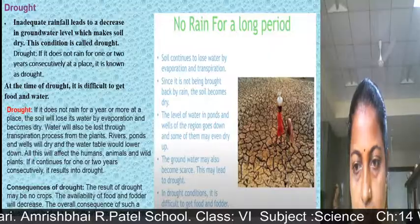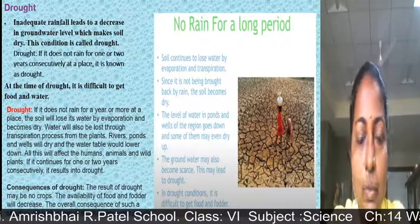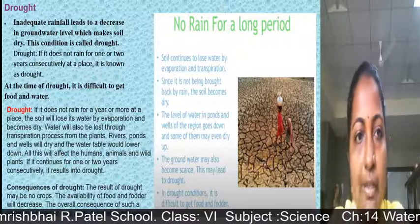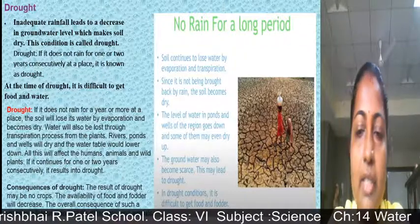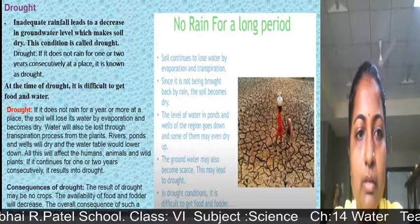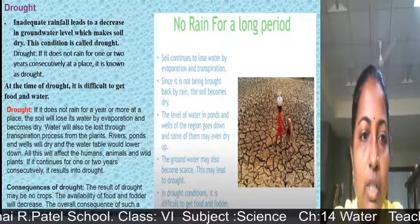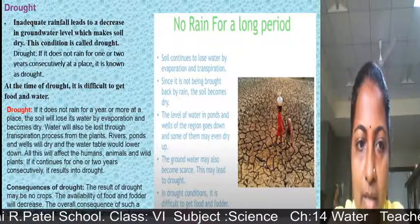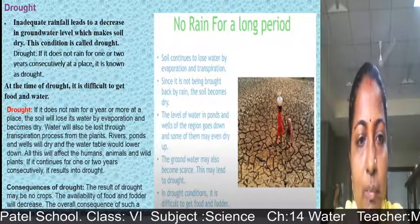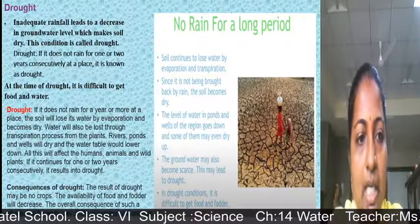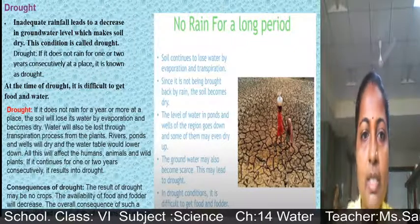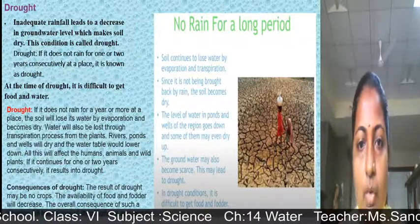Now let's talk about drought. Inadequate rainfall — very little or no rainfall — leads to a decrease in groundwater level, which makes the soil dry. This condition is called drought. If it does not rain for a year or more, the soil loses its water by evaporation and becomes dry. Water is also lost through transpiration from plants. Rivers, ponds, and wells dry up and the water table lowers, affecting humans, animals, and plants.